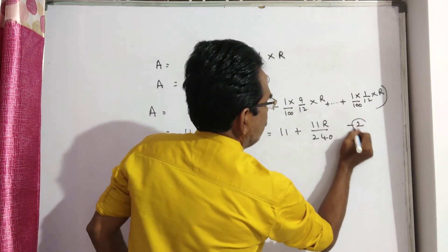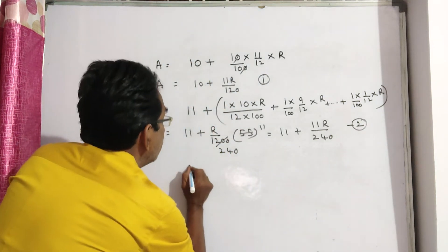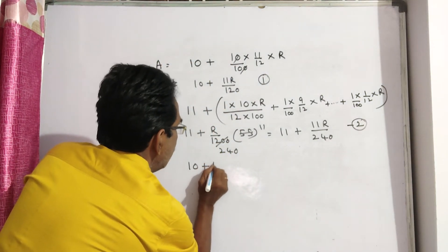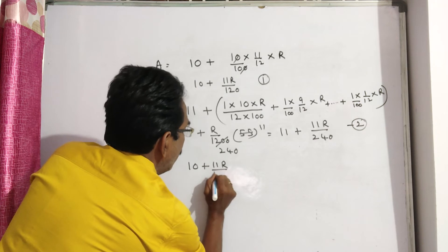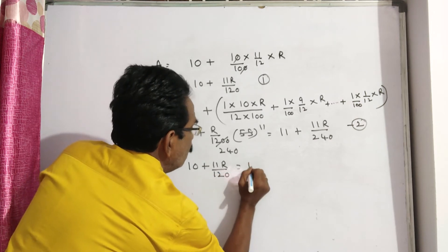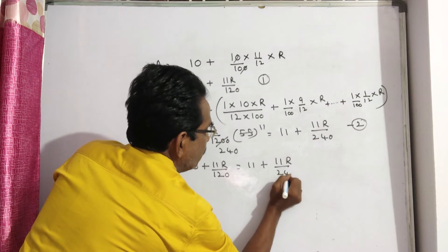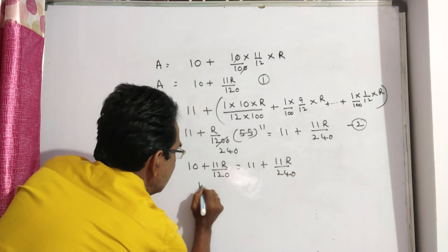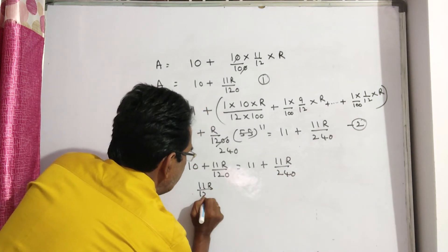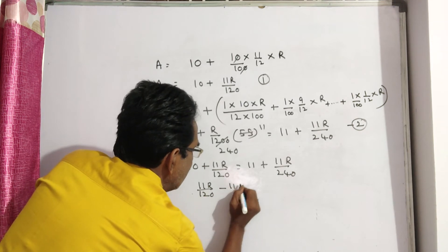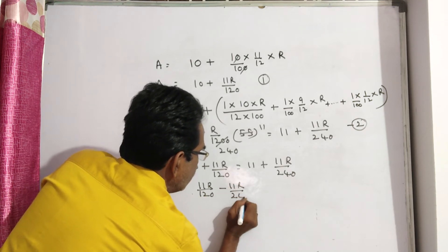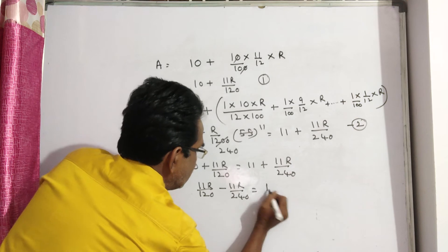Let us equate equations 1 and 2. 10 plus 11R by 120 is equal to 11 plus 11R by 240. Rearranging: 11R by 120 minus 11R by 240 equals 11 minus 10, which is 1.